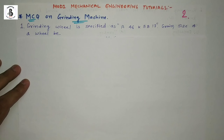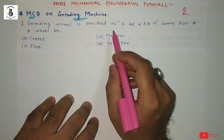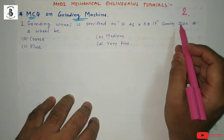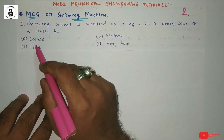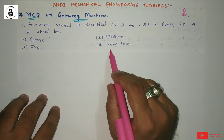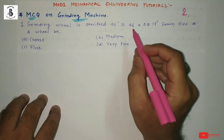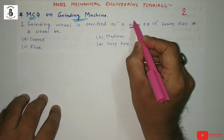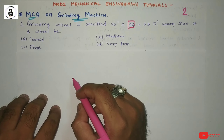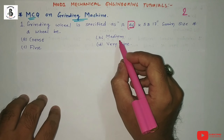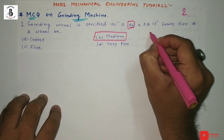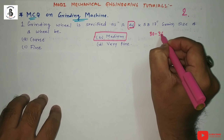Question number 1: A grinding wheel is specified as 46K5B17. What is the grain size of the wheel? Option A: coarse, Option B: medium, Option C: fine, Option D: very fine. Generally, the second number indicates the grain size of a grinding wheel. For 46, it will be in the category of medium size, so the answer is option B.